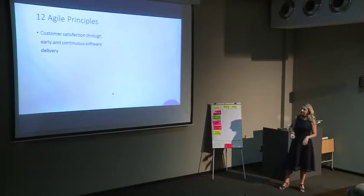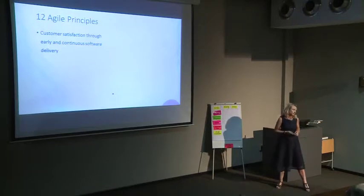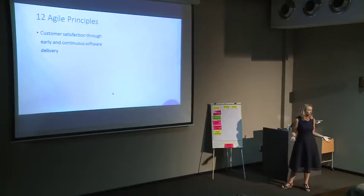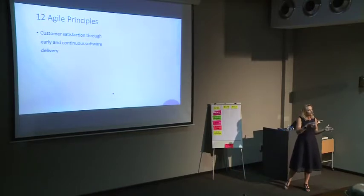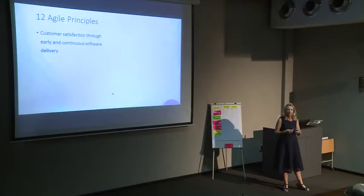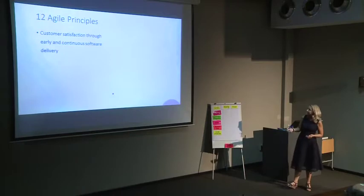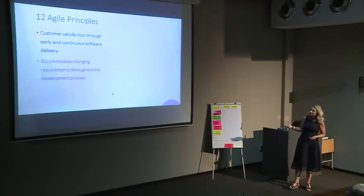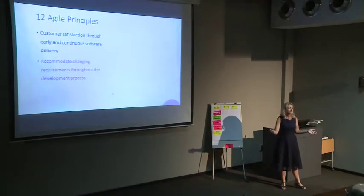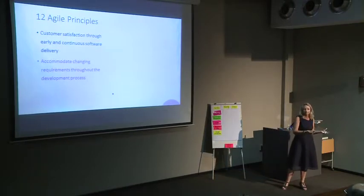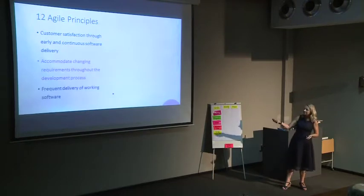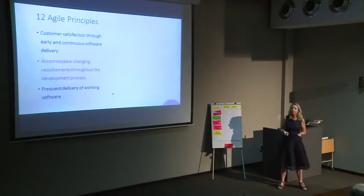The 12 Agile principles: customer satisfaction through early and continuous software delivery — instead of waiting 18 months for an HR module, we try to deliver something continuously. Often in the beginning you can't deliver everything every second week because there's a lot of back-end work and integrations, but once those are set up you can start giving customers features they can use immediately. Accommodating changing requirements throughout development — maybe there's something new customers want, or something scoped is no longer necessary. And frequent delivery of working software — we try and deliver something after every sprint.